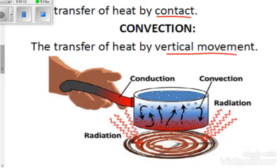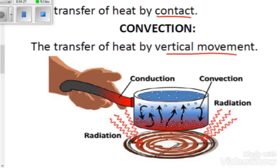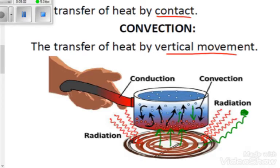Here is the pot example which illustrates conduction, convection, and radiation. Radiation is represented by waves transferring heat from the stove to a nearby region — if you put your hand at that position, you would feel heat through these heat waves without any direct contact. Convection is the transfer of heat by vertical movement — you can see the heat moving vertically from the stove to the pot.